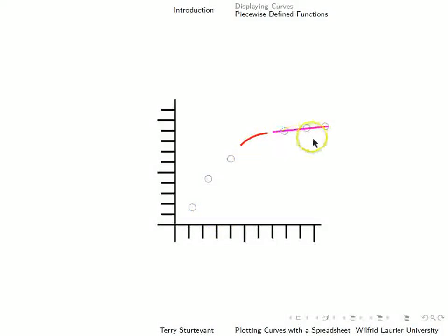In this case, at this point here, again, we want the y values of the curve and the line to match. We also want the slopes, again, to match so that it's a smooth transition.